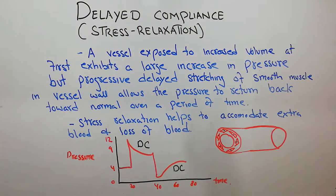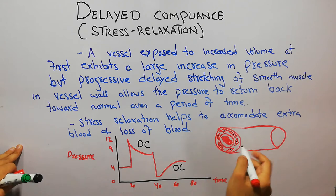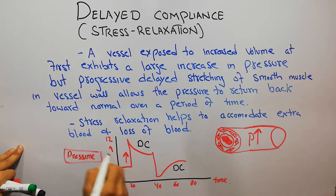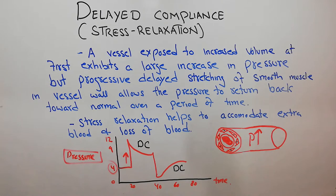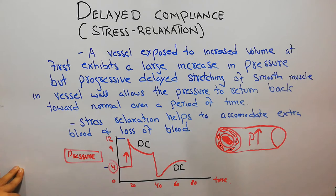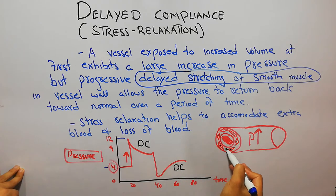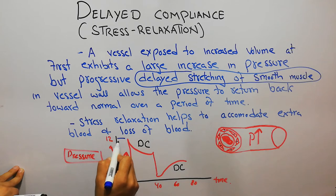Delayed compliance means that if a blood vessel is exposed to a large volume of blood — a lot of blood has been injected into this blood vessel — the pressure in this vessel will increase. For example, here the volume of blood has been increased and as soon as the blood is injected, the pressure initially will go from 4 to around 12. But due to delayed stretching of the smooth muscles making the wall of the blood vessel, the pressure begins to decrease.